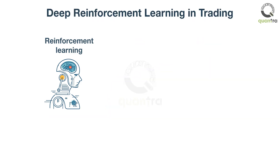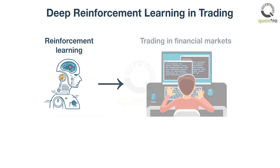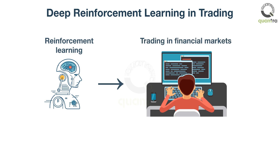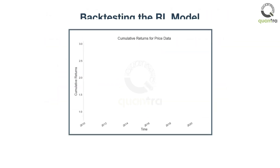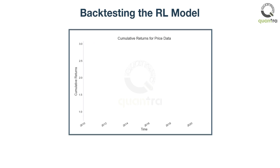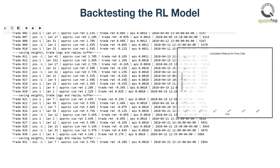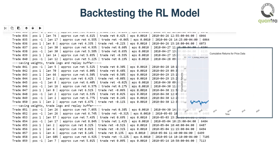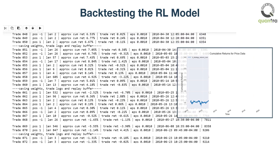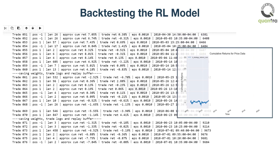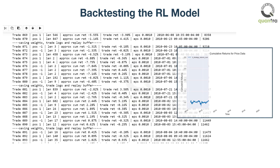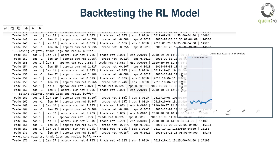With the success of RL in Go and chess, we applied the RL framework to trading in financial markets. We have used data for the past 10 years. The RL starts with neural networks that know nothing about trading. As seen on screen, in 2010 it is not performing well — trade 61 led to a return of minus 6%. Like a novice, it needs experience and feedback to improve.